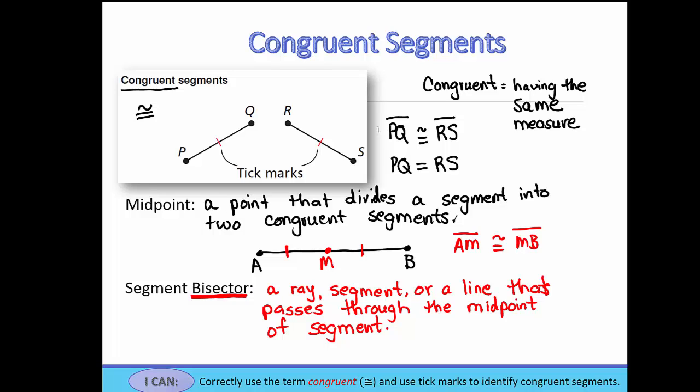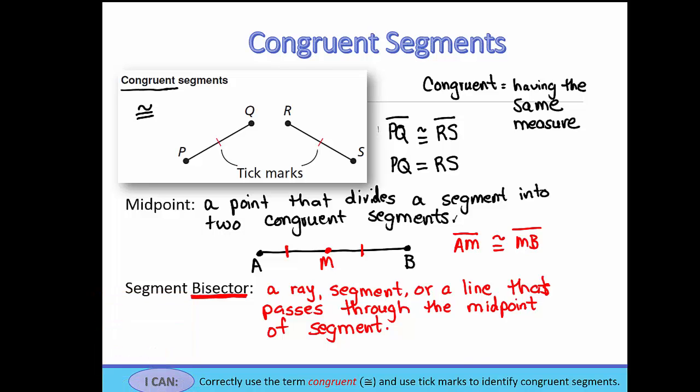Bisector essentially means it divides into two congruent segments — it cuts it in half, it bisects it. So for example, ray MC would be a segment bisector because it intersects or passes through the midpoint of segment AB, and therefore this ray cuts segment AB in half, making it the segment bisector.